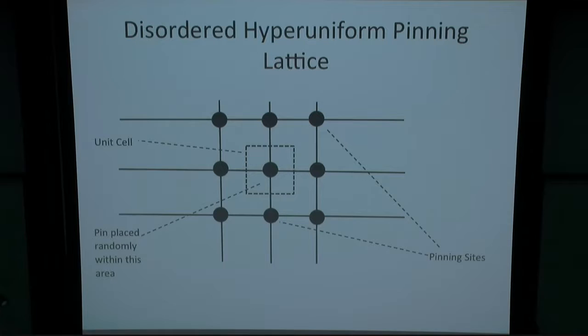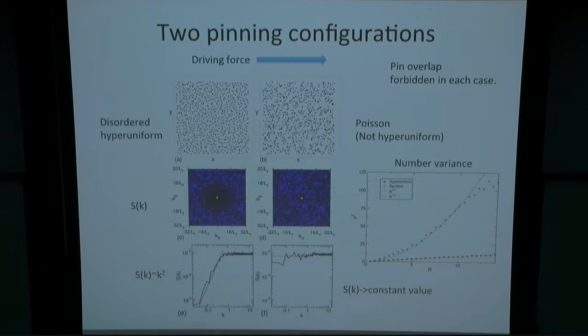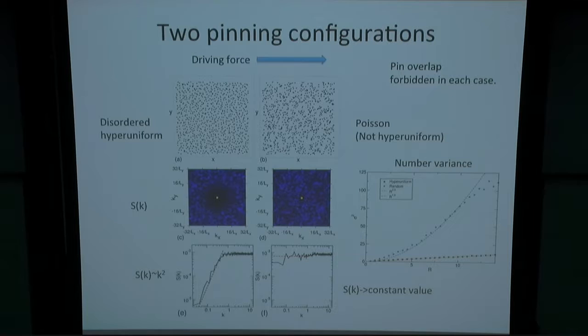What this does is it destroys short-range order of the pinning sites, but if you step far enough away from the lattice, you regain the long-range order. The first thing we have to check is whether we actually created a hyperuniform pinning configuration. This is just the pinning sites themselves — this is our Poisson, non-hyperuniform arrangement, and you can see even by eye that there's clustering of the pinning here. Then this is our disordered hyperuniform arrangement. Looking at the structure factor, we have finite weight for the Poisson system and zero weight at small k for the disordered system. The structure factor integrated over angle shows S(k) going to a constant value for our Poisson system, and falling to zero as k squared for the disordered hyperuniform system.